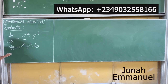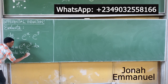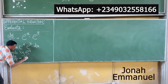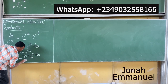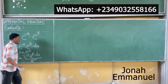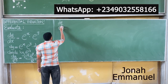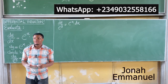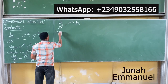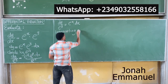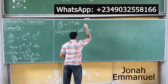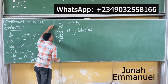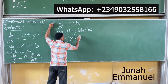The e^y terms cancel, so you have dy over e^y equals e^x dx. At this point, integrate both sides. The integral of dy over e^y equals the integral of e^x dx. How do you integrate exponential terms?